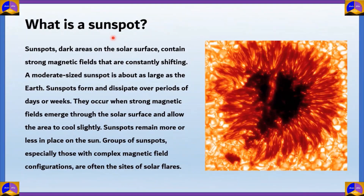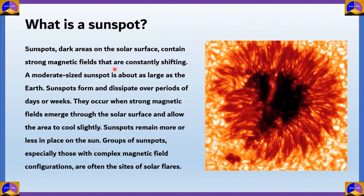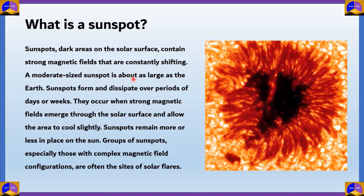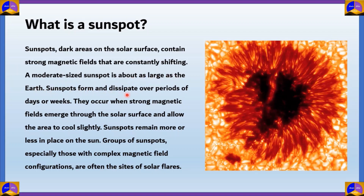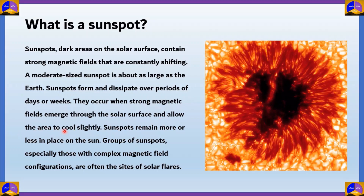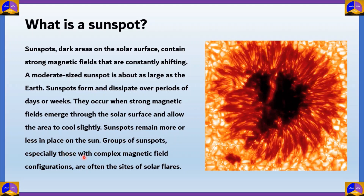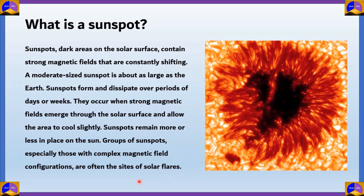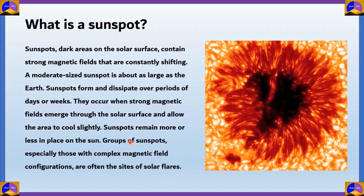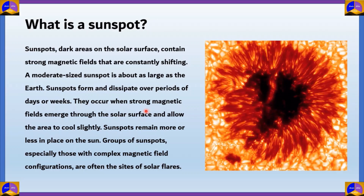What are sunspots? Sunspots are dark areas on the solar surface that contain strong magnetic fields, which are constantly shifting. A moderate-sized sunspot is about as large as the Earth. Sunspots form and dissipate over periods of days or weeks. They occur when strong magnetic fields emerge through the solar surface and allow the area to cool slightly. Groups of sunspots, especially those with complex magnetic field configurations, are often the sites of solar flares. Since they are cooler than the rest of the sun's surface, they appear dark to us — hence we call them sunspots.